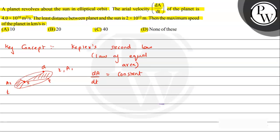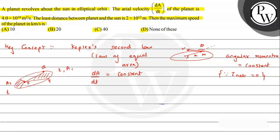We have already done the derivation. Let's say this is our elliptical path, this is the sun, and the planet of mass small m is at a distance r. Let's say its velocity v is in some direction at an angle theta. In this situation, angular momentum is conserved because net torque is zero — the force acts toward the center only, so the r vector and force are along the same line, making torque zero.